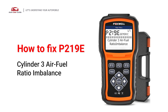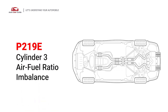If you are getting a P219E error code, this video is going to show you two practical solutions to fix the error code at home. This means the air-fuel mixture in the number 3 cylinder is significantly different from other cylinders, leading to an imbalance. Under this circumstance, stop driving and repair your vehicle immediately.